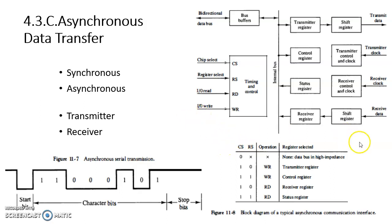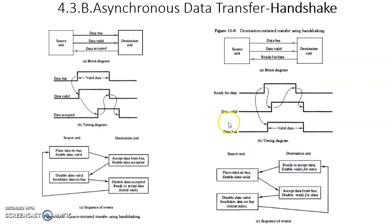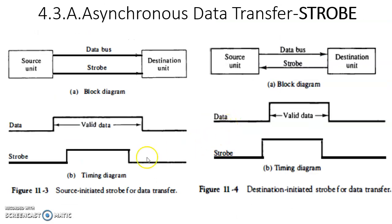The CPU can check the status of a peripheral device using the status register, or control the I/O device using the control register. In order to use this interface, it must first be selected. The CPU enables the interface with the chip-select signal: if chip-select is 0, it is not working; if it is 1, it will perform either I/O read or I/O write. This is how asynchronous data transfer takes place.